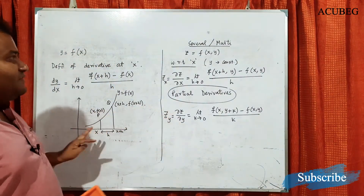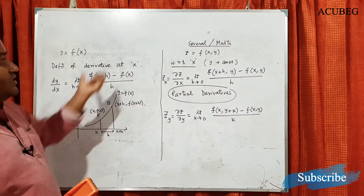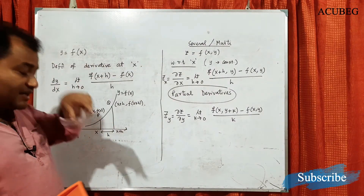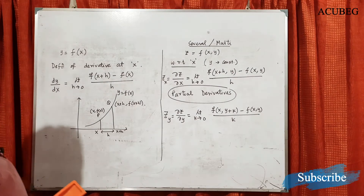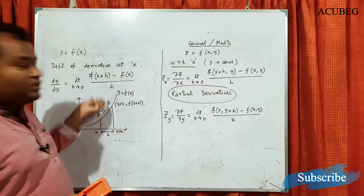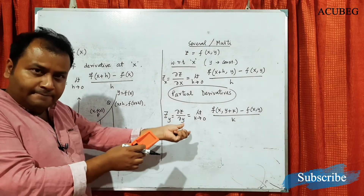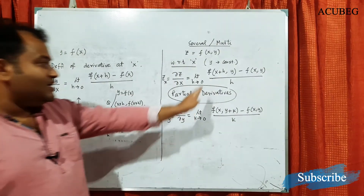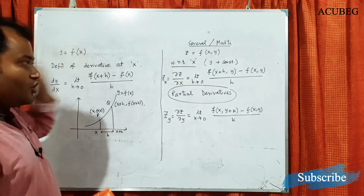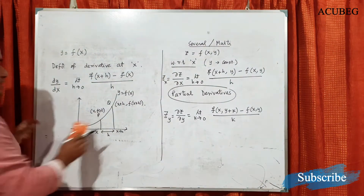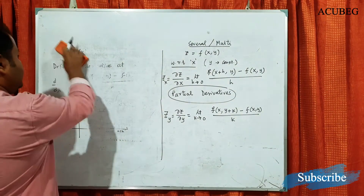This is the basic difference in the definition of the derivative between single variable and multivariable functions. In a multivariable function, the rule of single variable differentiation is applicable only partially — in one part at a time, while the other part is treated as a constant.